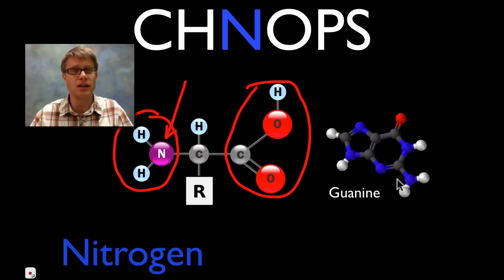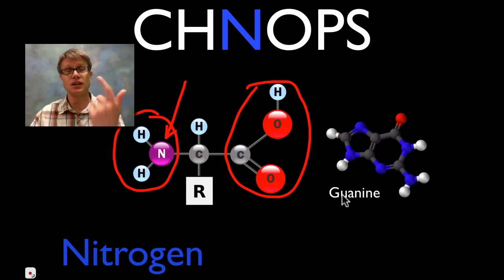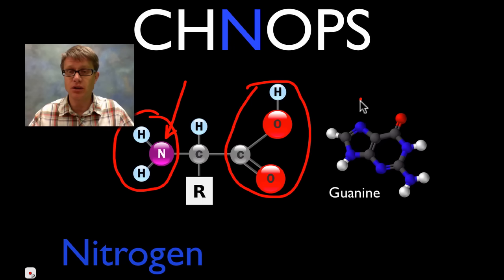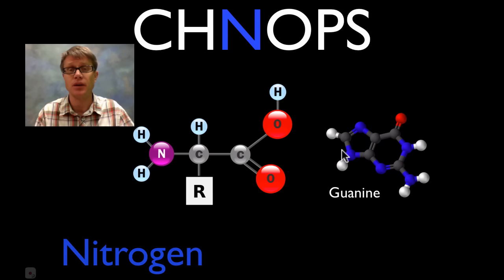This over here is guanine. When you're talking about DNA, what stores the information are the nitrogenous bases — guanine is just one, but we also have cytosine, thymine and adenine. And so guanine if you look here has a whole bunch of nitrogen in it. And that nitrogen we have to get from our atmosphere just to make the genetic material.